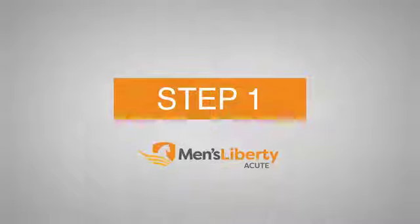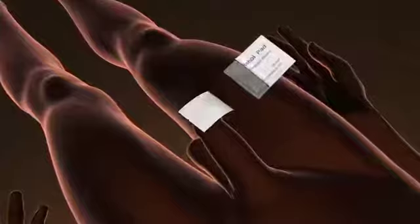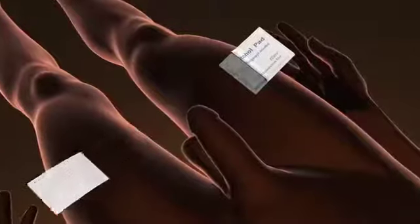Step 1. To begin, wipe the head of the penis with the alcohol wipe and allow to dry completely. The alcohol must be completely dry before the next step.